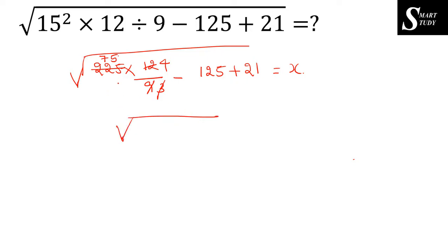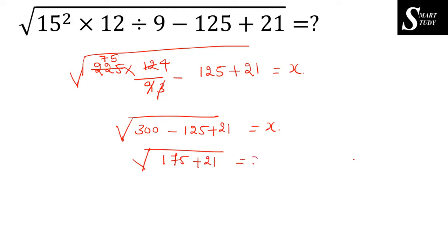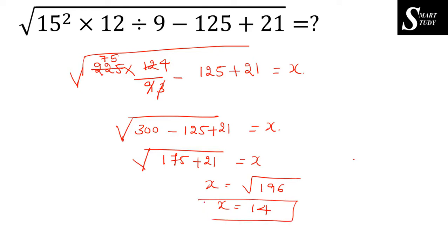To confirm: 300 minus 125 is 175, plus 21 is 196. Root of 196 equals 14, so the final answer is 14. The question is quite simple and you can get the answer soon after the cancellation step.